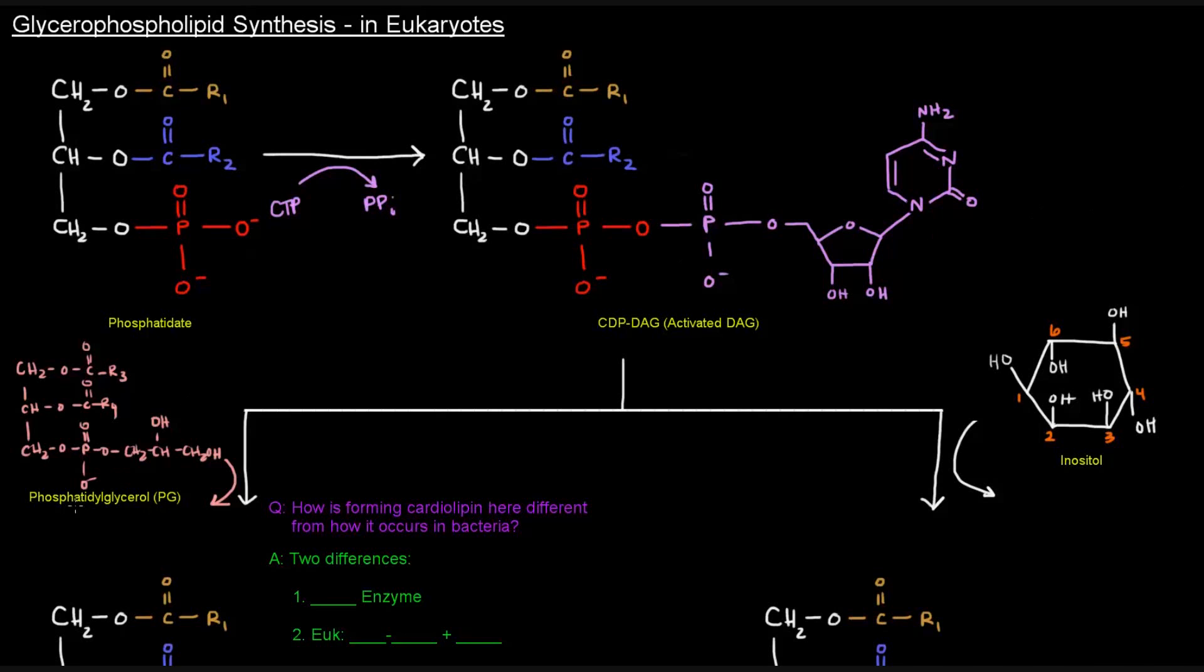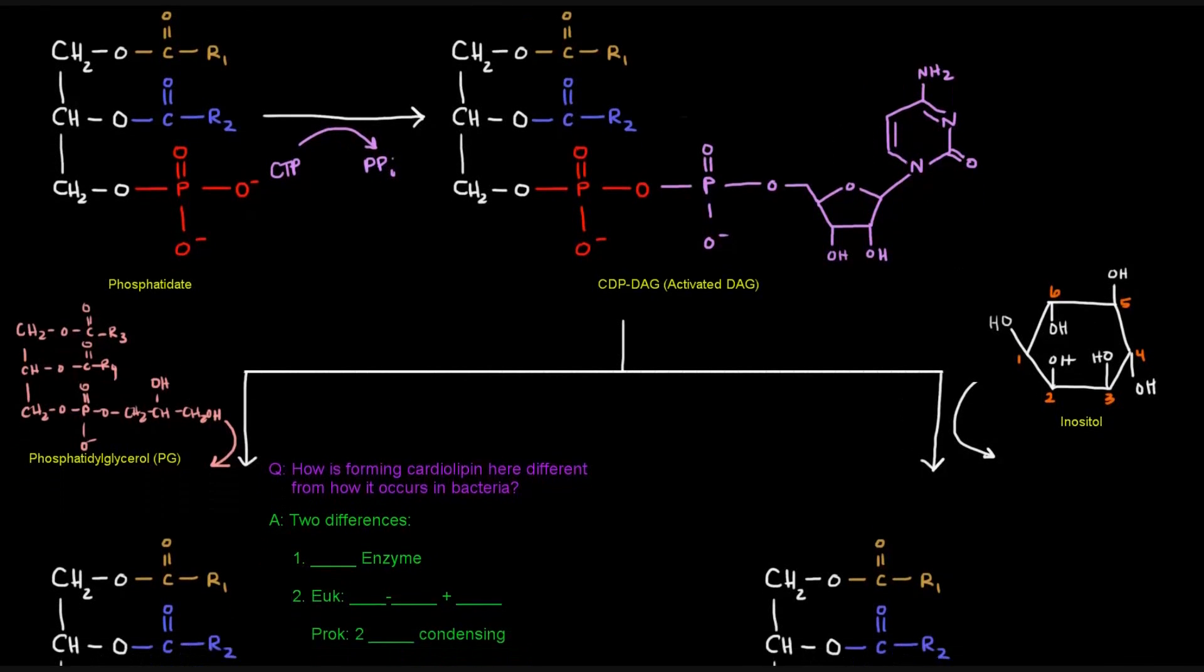So let's say we added phosphatidylglycerol to the CDPDAG. What would happen? Well, let's kind of number this here first. Number this as carbons 1, 2, and 3 over here. And we'll call this 1, 2, and 3, but we'll make all those primes. So that'll be 1 prime, 2 prime, and 3 prime.